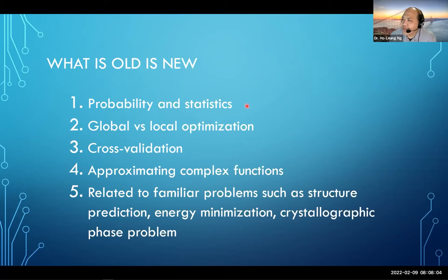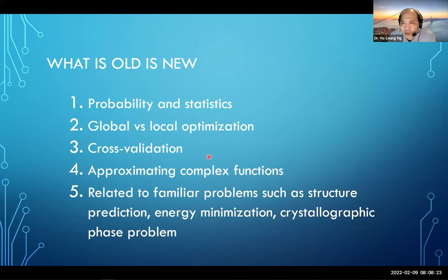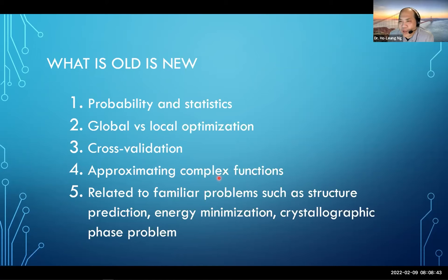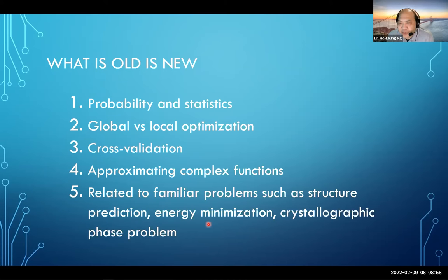What we use for cross-validation — for crystal structures and refinement, we use the R-free method — is a general type of method for cross-validation. Basically, we want to make sure we're not overfitting our data. We already mentioned approximating complex functions using Fourier series. A lot of this work is very similar to the mathematical approaches we see for protein structure prediction. And we now know the work of AlphaFold2, for example, as well as energy minimization and solving the crystallographic phase problem — these are all very machine-learning-type problems that one could attack using concepts we are already familiar with.